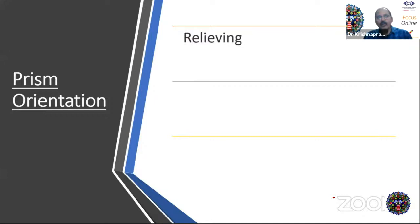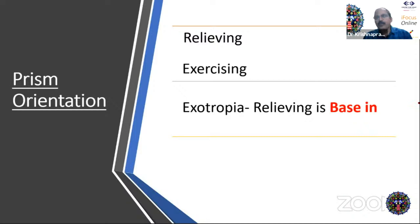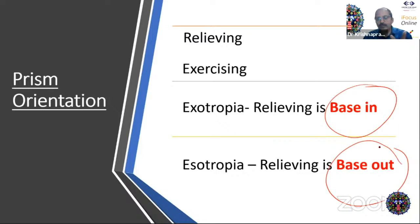In exotropia, the relieving prism format is always base-in. In esotropia, the relieving prism is base-out. Remember: for exotropia, base-in is relieving and base-out is exercising. For esotropia it is reversed.